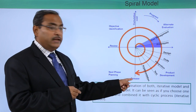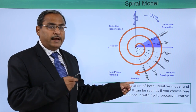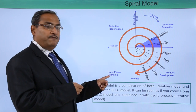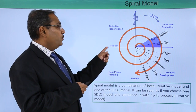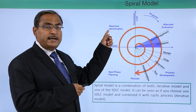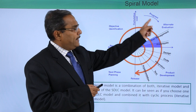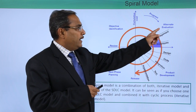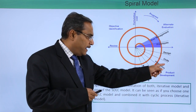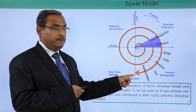One release will be obtained and given to the client so that the client can use it. Here we are having the next phase planning, then we go for the review, then objective identification, then cumulative cost. Again the progress will be initiated and then alternate evaluation will be done.